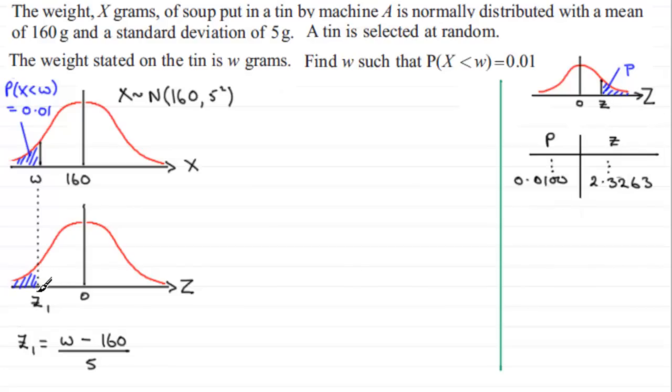Now we've got a value Z1 here, which is on the left-hand side of 0, not on the right-hand side. But we can work off the symmetry properties of the curve. If we take this area here, which we know is 0.01, but reflect it over the other side, then we're looking at a value of P here which is 0.01. In the tables I was looking up, it said 0.0100. The Z value that corresponds with that was 2.3263. So I would know that this value is 2.3263.